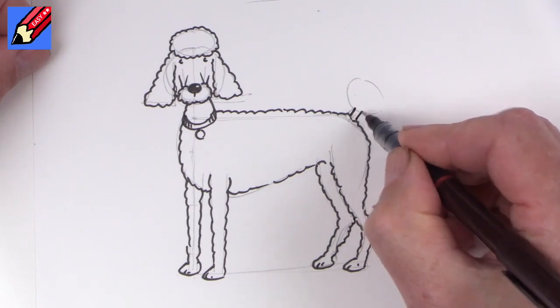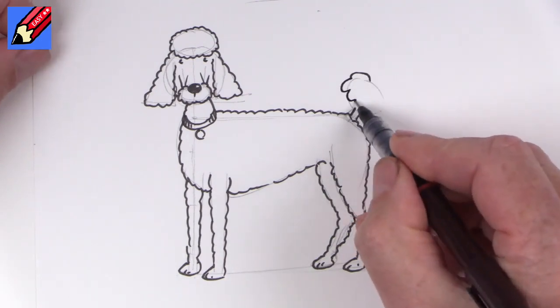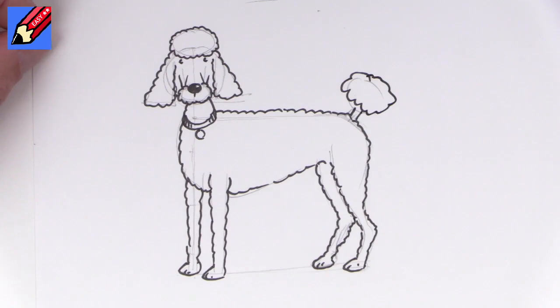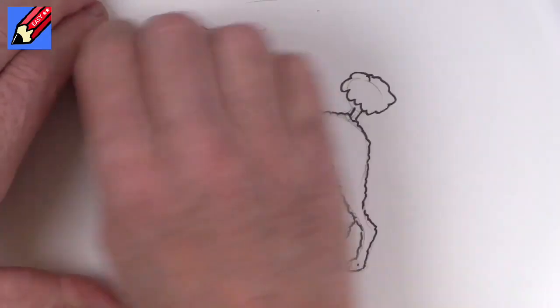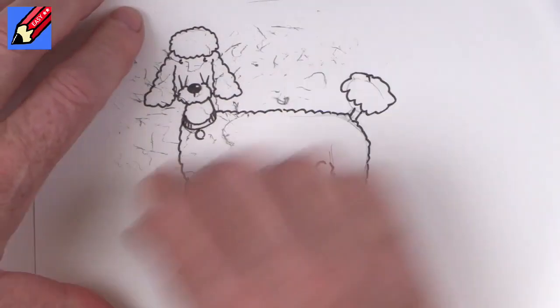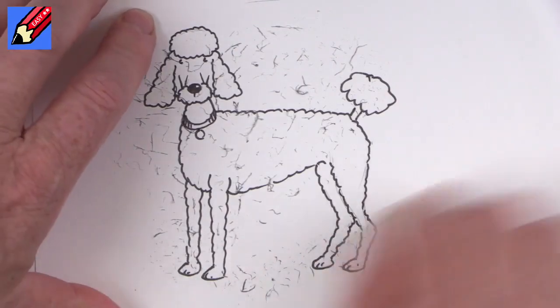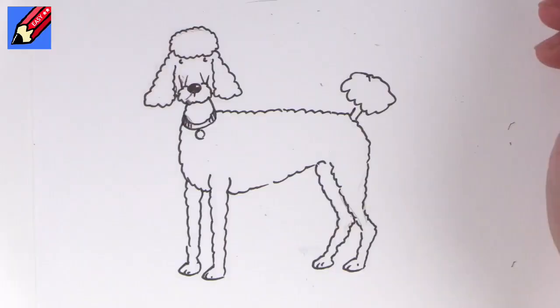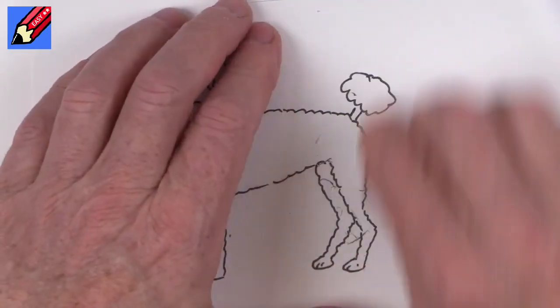And all we need to do is put two little bits there for the tail and a great big pom-pom on the top. Now when you have made absolutely sure that the ink is dry, then you can erase those pencil lines and no one will never know how you planned out your drawing.